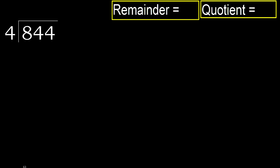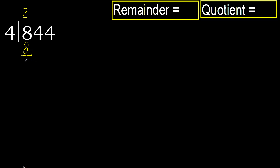844 divided by 4. Starting with 8: 4 multiplied by which number is nearest to 8 but not greater? 4 multiplied by 3 is 12 — that's greater. Multiply by 2 is 8, which is not greater. Subtract: 8 minus 8 equals 0.